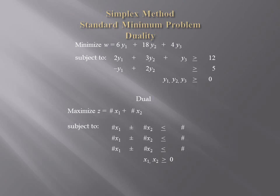Since the dual will have 2 variables and 3 constraints, the template should look like this: maximize z equals a number times x1 plus a number times x2, subject to 3 constraints, all of the form: a number times x1 plus or minus a number times x2 is less than or equal to a number. All of the inequalities among the constraints must be of the less than or equal type, since this will be a standard maximum problem.